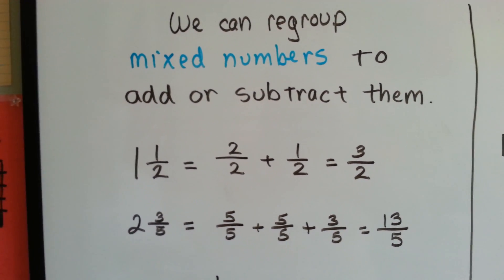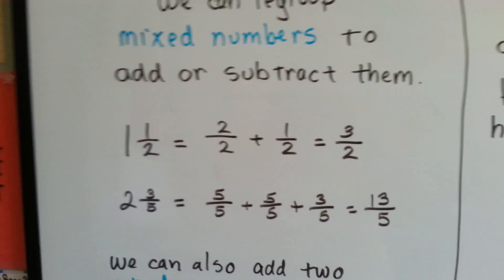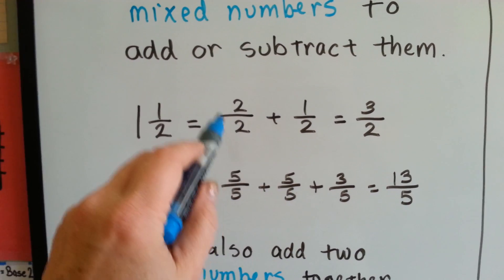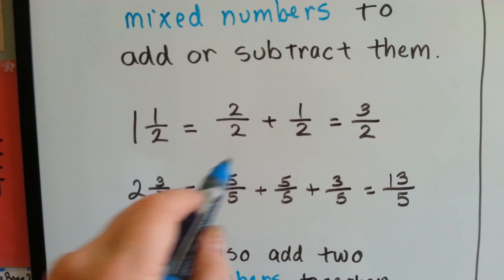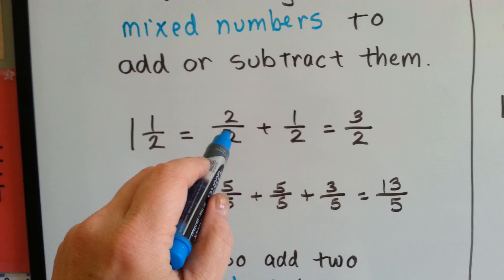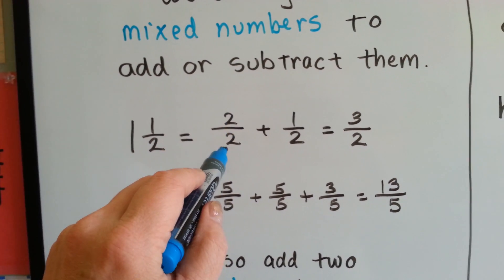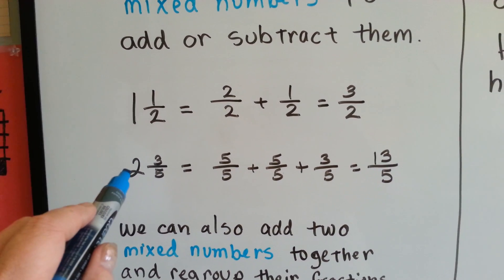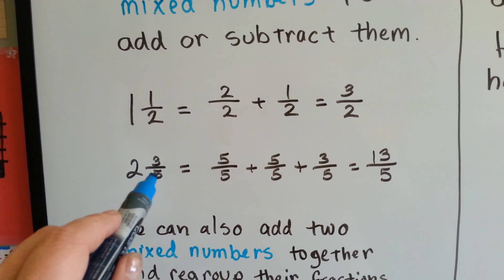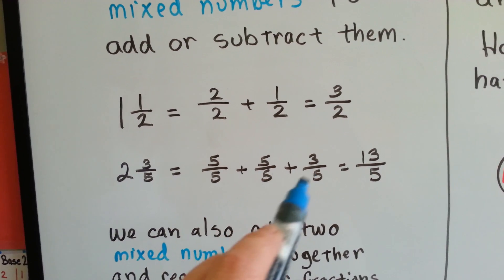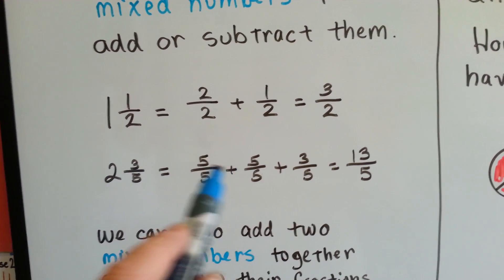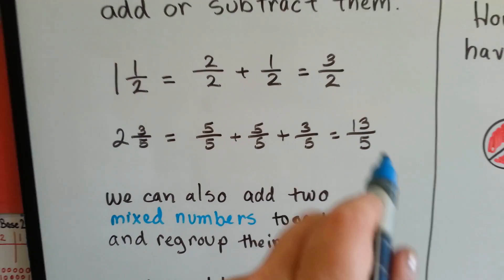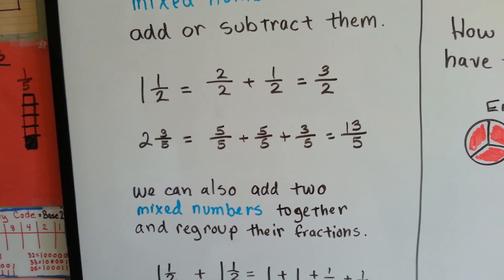We can regroup them to add or subtract them. 1½ becomes 2/2 plus 1/2, because 2/2 is one whole. When you have two parts of something that's split into two parts, you've got the whole thing. 2/2 plus 1/2 is 3/2. 2 and 3/5 is 5/5 plus 5/5 plus 3/5. That would be 5 plus 5 plus 3 is 13/5. And then we can split back into 2 and 3/5.